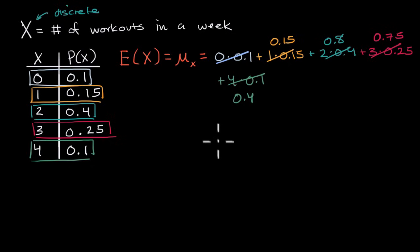So we get 0.15 plus 0.8, plus 0.75, plus 0.4. Let's add them all together. Let's see, five plus five is ten, and then this is two plus eight is ten, plus seven is seventeen, plus four is twenty-one. So we get all of this is going to be equal to 2.1.